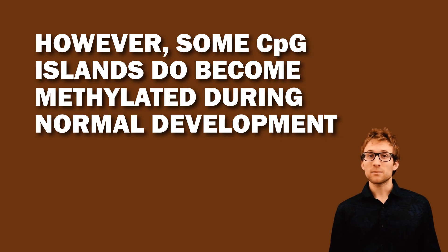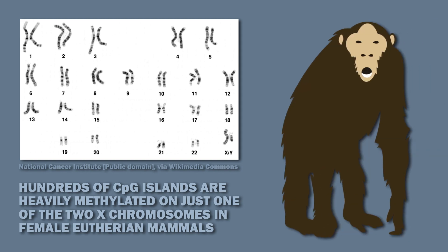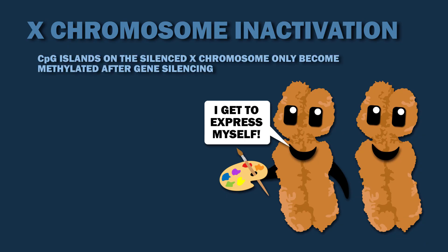However, some CpG islands do become methylated during normal development. For example, hundreds of CpG islands are heavily methylated on just one of the two X-chromosomes in female eutherian mammals, such as primates. The CpG islands on this silenced chromosome only become methylated after gene silencing, locking in the silenced state rather than initiating it.